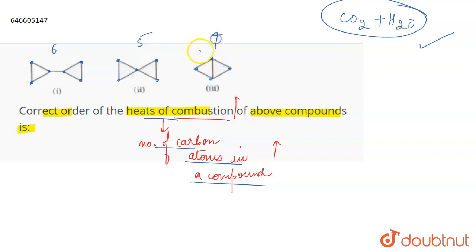What will be the order of heat of combustion? First is going to have the maximum, then it will be second, and then it will be third. It will be in the order of the number of carbon atoms. This is the correct order and the correct answer for the question.